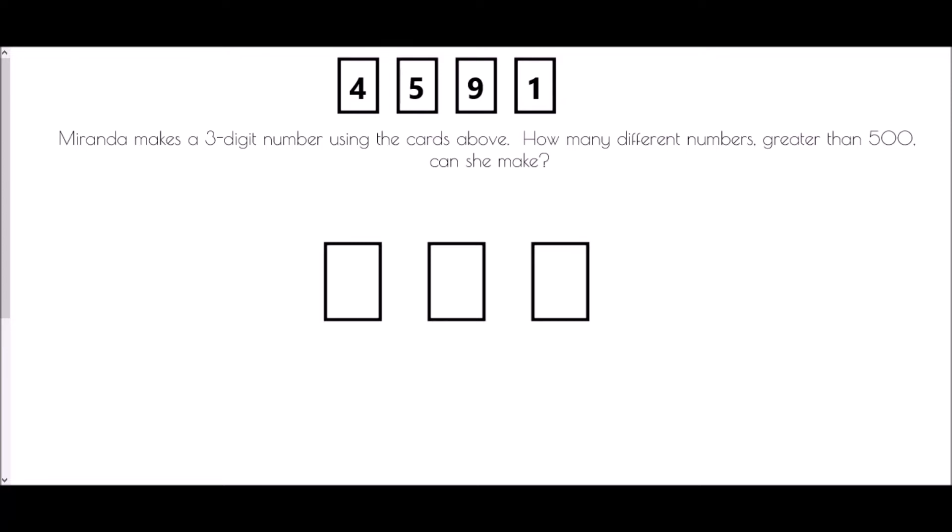And we need to look first of all at this phrase, greater than five hundred. Because the number needs to be greater than five hundred, it means that the first digit cannot be four and it cannot be one. The only options would be five or nine. So in the first box, we have two options. Now in the second box, we can use any of the digits we didn't previously use. So I have three options.